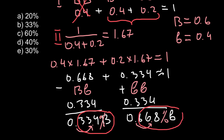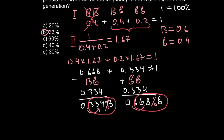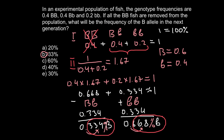Checking the answers, option B gives approximately 33%, which closely matches our result — so that is our answer today. I hope my explanation was clear enough so you can solve similar problems. Thank you for your attention. Please subscribe, share this video with your classmates, and see you in the next video. Goodbye!